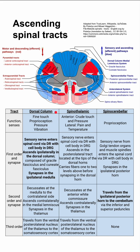Let's start with the dorsal column. Its function is fine touch, proprioception, pressure, and vibration. The first order neuron is a sensory nerve that enters the spinal cord via the dorsal root, with the cell body in the dorsal root ganglion. It ascends ipsilaterally in the dorsal column and synapses in the ipsilateral medulla.